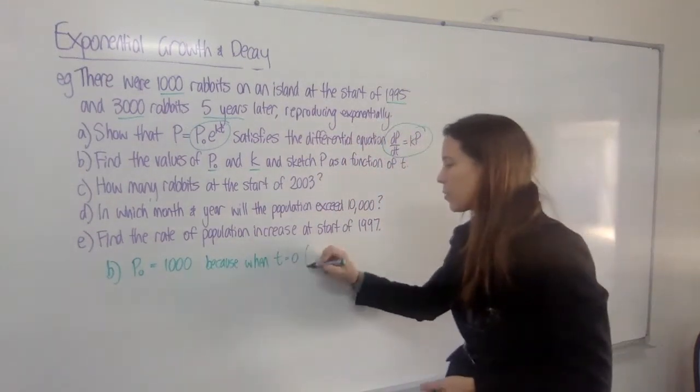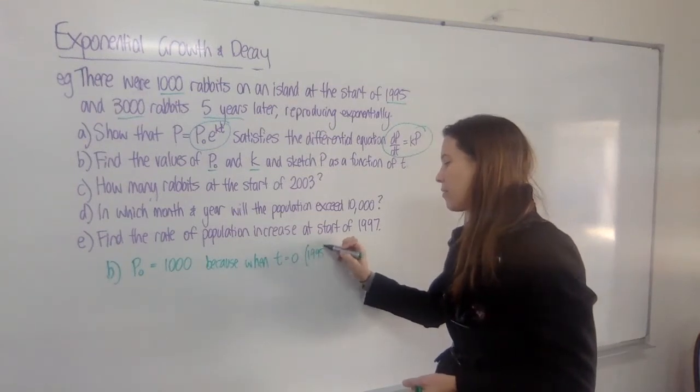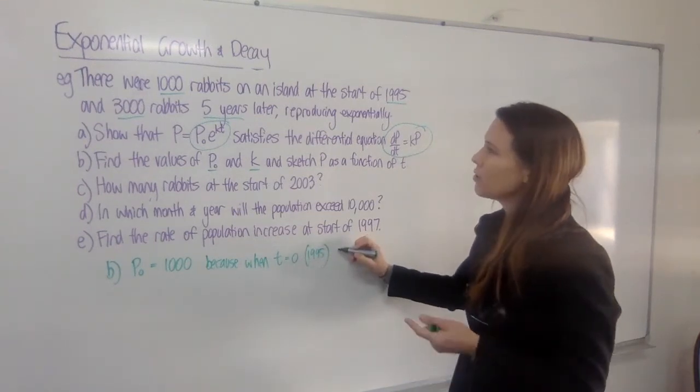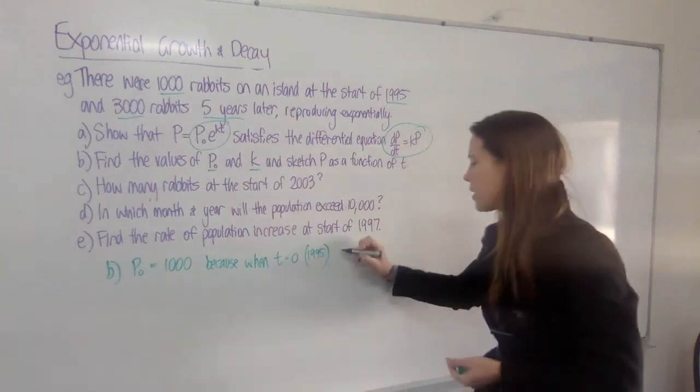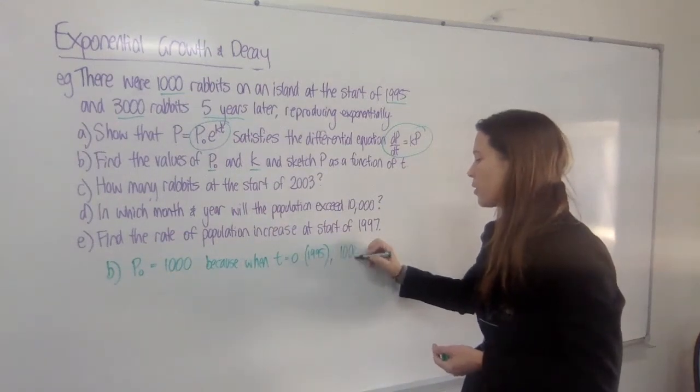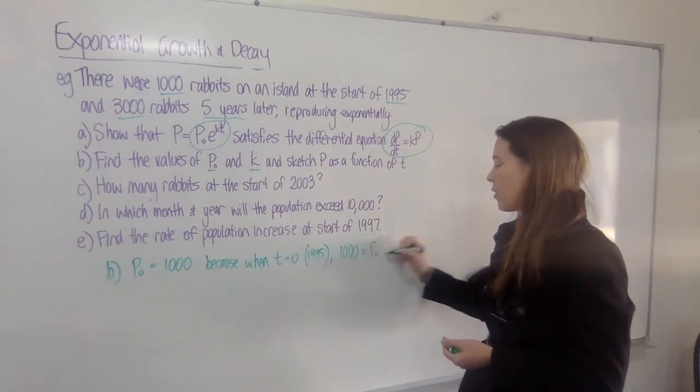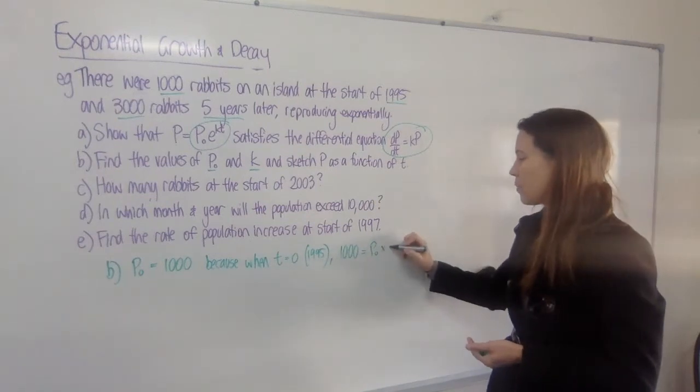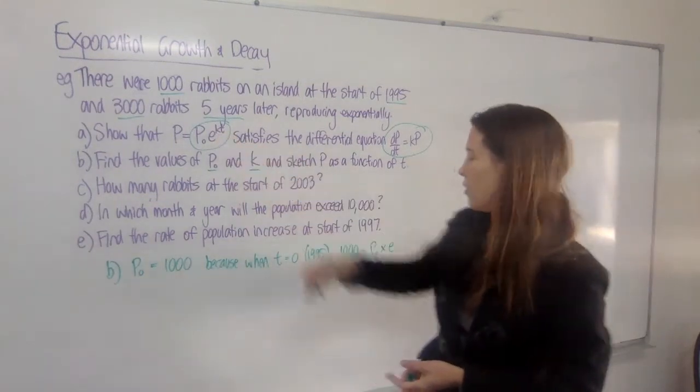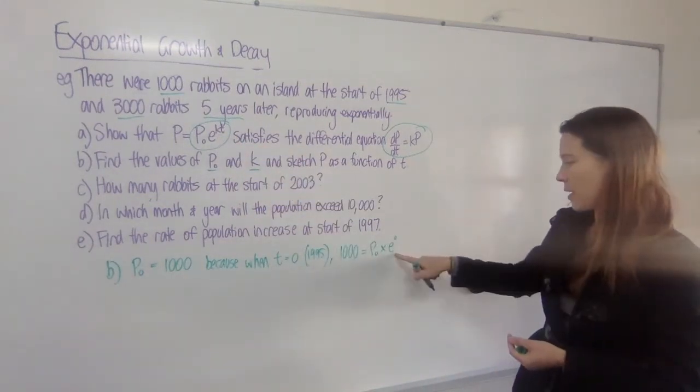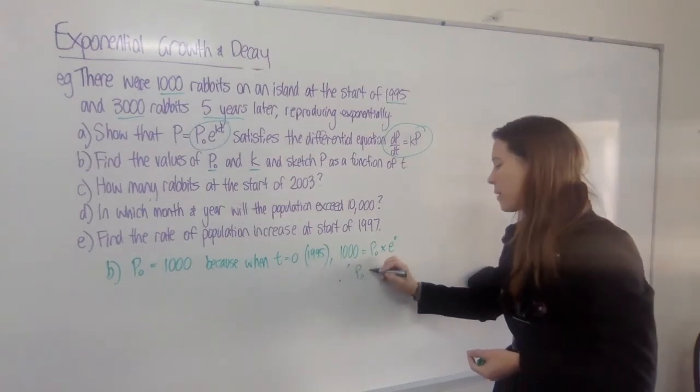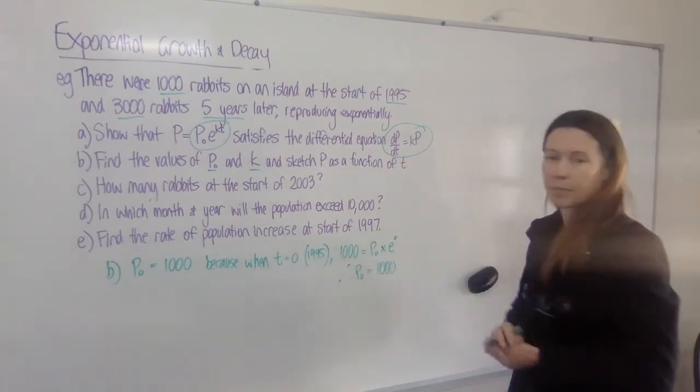And so I would write the sentence, because when time equals 0, in other words, in 1995, the population, we know the population was 1,000, so we can put that in for P. And we can write P₀ times e to the power of 0, and this is 1. Therefore, P₀ must be 1,000.